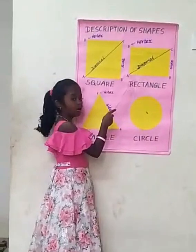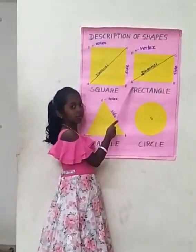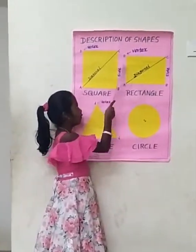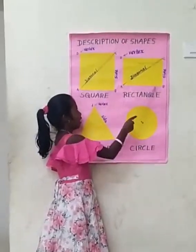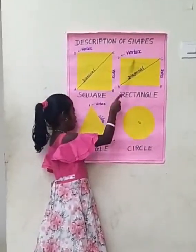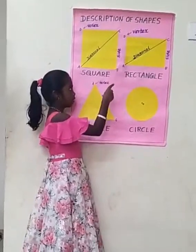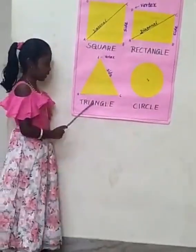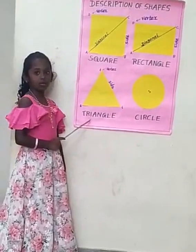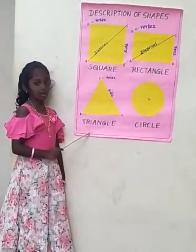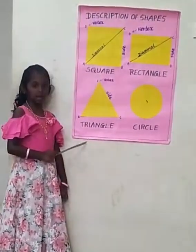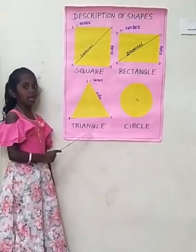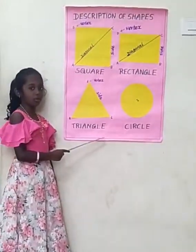This is a rectangle. A rectangle has four sides and four corners and two diagonals. Opposite sides are equal. This is a triangle. A triangle has three sides, and the sides of a triangle may or may not be equal.